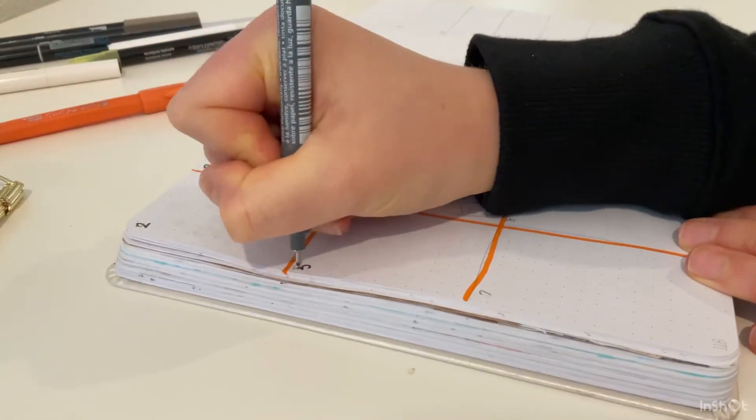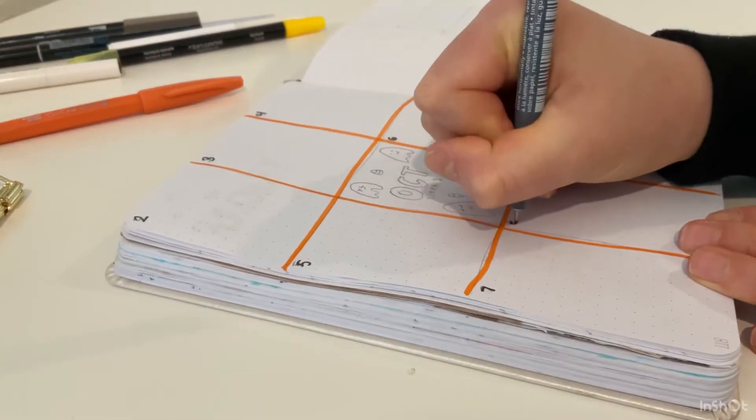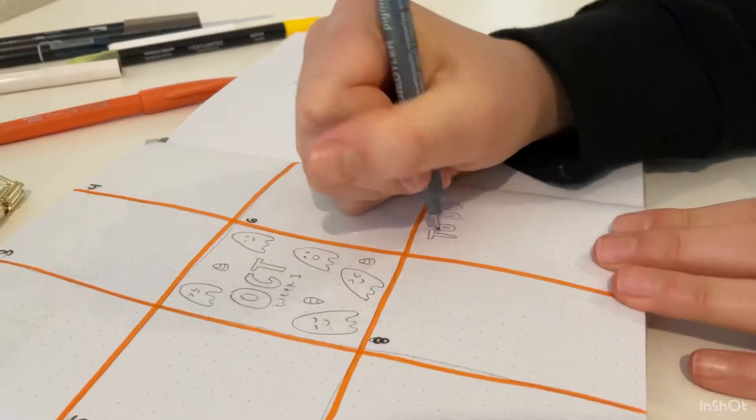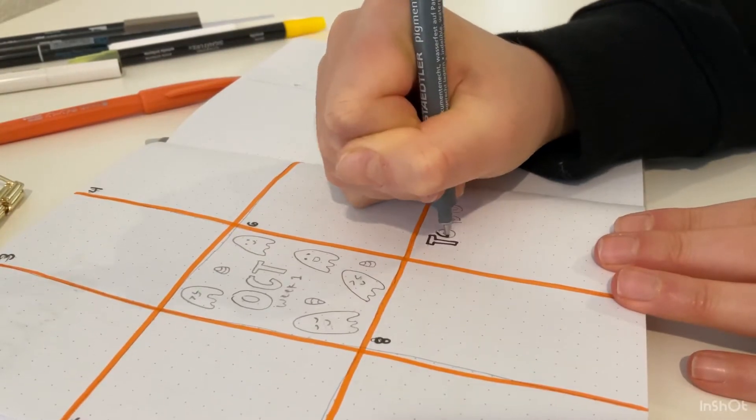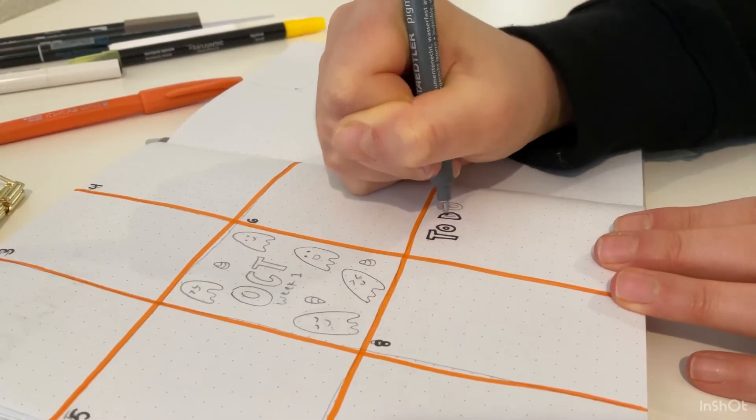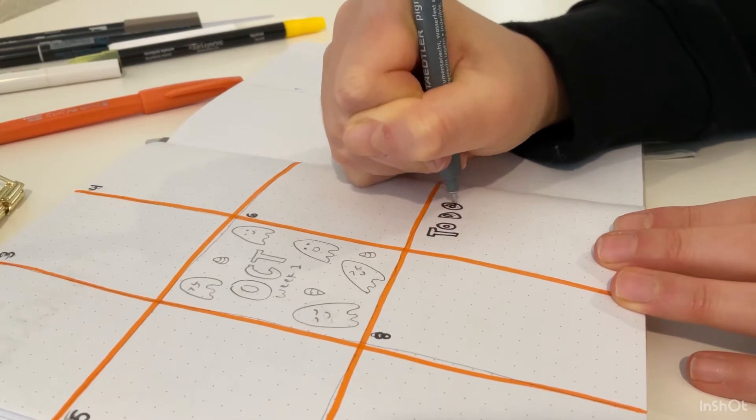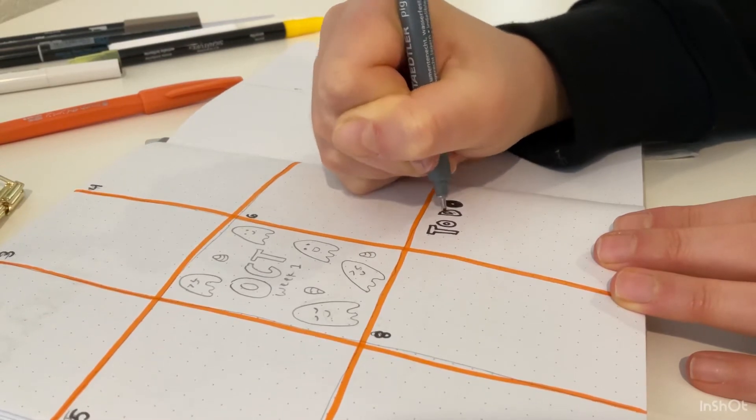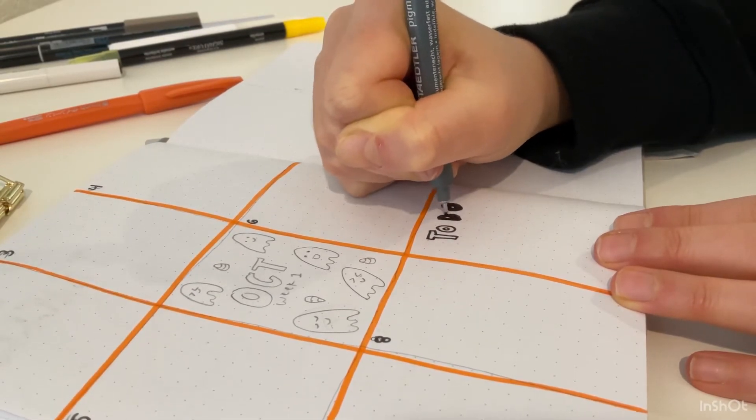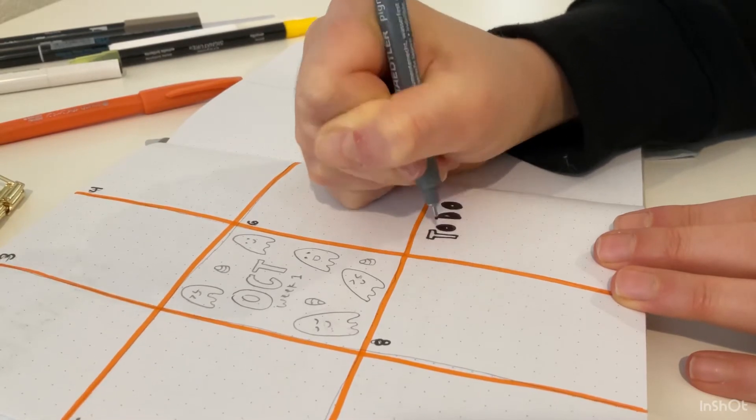Now moving on to the first weekly spread. I made this simple grid and then I'm going to add some numbers and then a little to-do list here - same block letters. Then we will do a fun little collage in the center with ghosts, October, and week one.